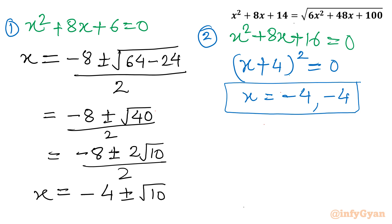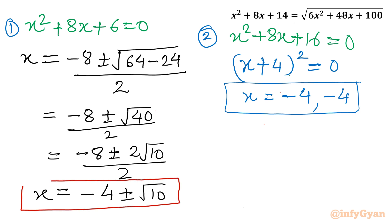We are now having four solutions: x = −4 + √10, x = −4 − √10, and x = −4 (twice). So four solutions are here.